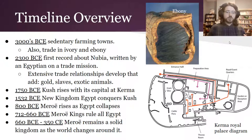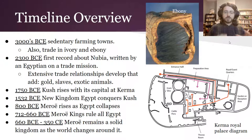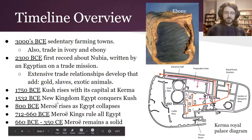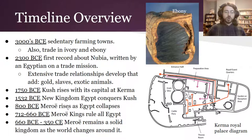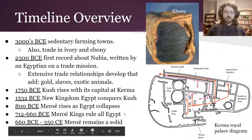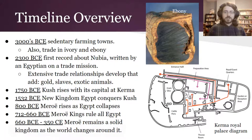In 1532, the New Kingdom of Egypt conquers Kush, and Kush falls. But a later kingdom develops around 800 BCE, because Egypt starts to have political infighting troubles, allowing this lower kingdom of Nubia to rise with a new capital at Meroe. The kings of Meroe rule all of Egypt from about 712 to 660 BCE. From 660 through 350 CE — crossing over zero — Meroe remains a solid kingdom as the world changes around it. That's the big overview of their timeline.